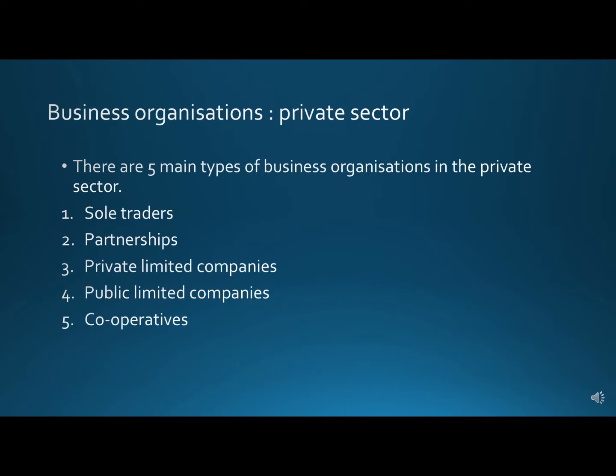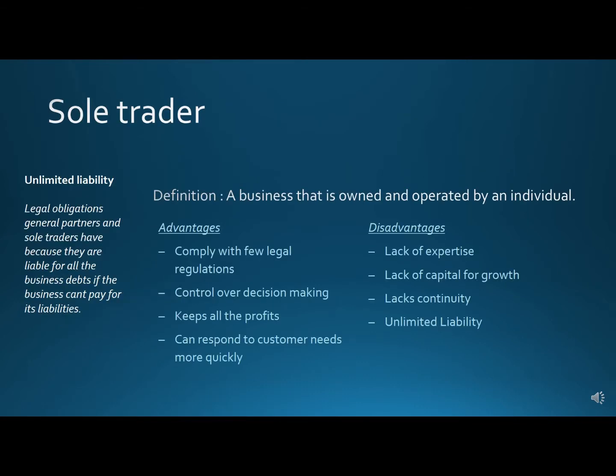In the private sector we have five types of organizations. The first is a sole trader — a business that is owned and operated by an individual. That individual takes on the responsibility of all the decision making and all the responsibilities that come with the business, such as decisions regarding marketing, production, and staffing recruitment — everything. They control the business.